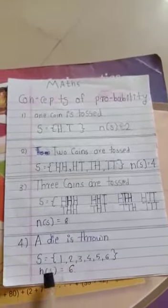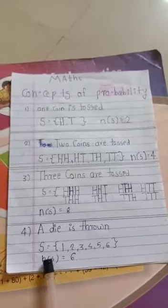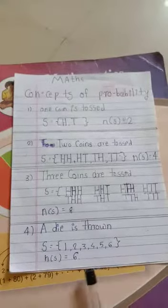A die is thrown. S is equal to 1, 2, 3, 4, 5, 6. N of S is equal to 6.